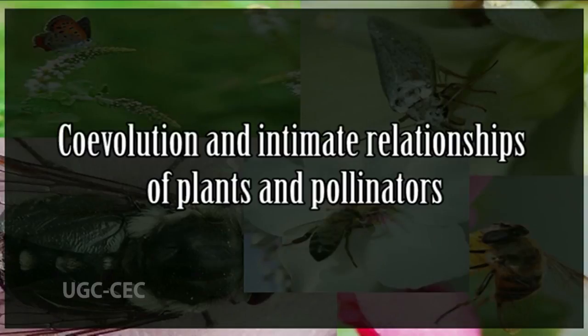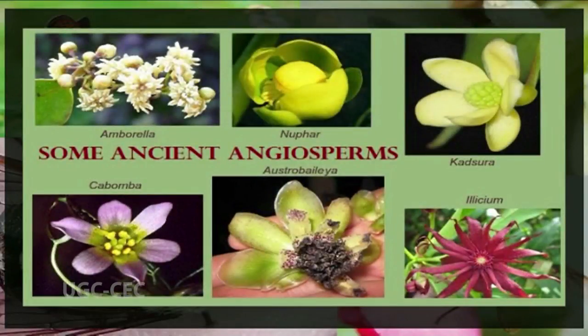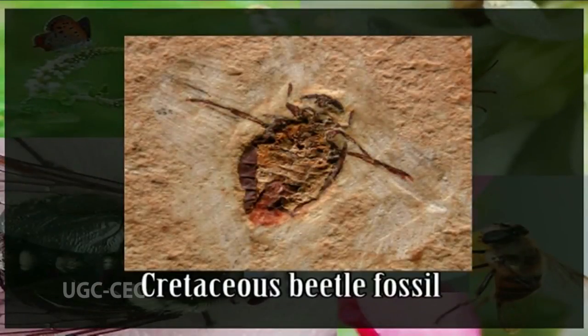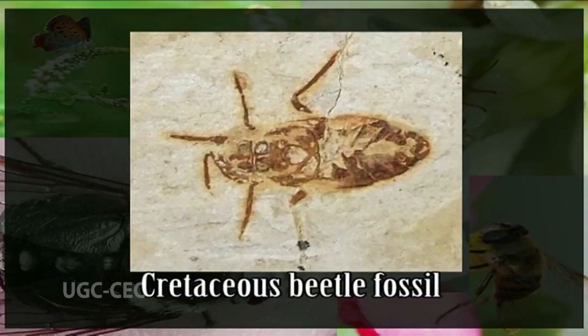Now we will discuss co-evolution and the intimate relationships of plants and their pollinators. Plants and their pollinators began evolving their intricate dance of co-dependency over 100 million years ago with the origin of flowering plants. They fine-tuned it during the Cenozoic era, about 65 million years ago, as flowering plants began to dominate all the world's living landscapes. It is evident from evolutionary studies that the association between beetles and angiosperms during the early Cretaceous, around 145 to 65.5 million years ago, led to the parallel radiations of angiosperms and insects.